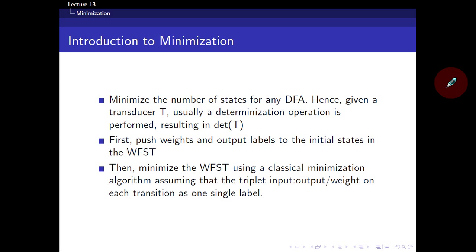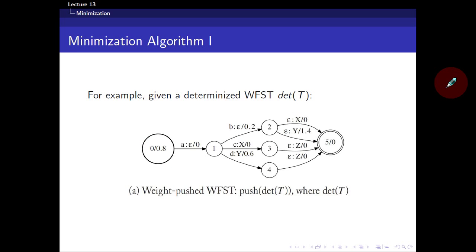What is minimization? Given any deterministic finite automaton, you would want to minimize the number of states. Certain states cannot be reached or are not worth reaching, so you need to minimize your WFST. There are many ways to do it, but the algorithm I'm going to highlight is the one mentioned in Hori's book.